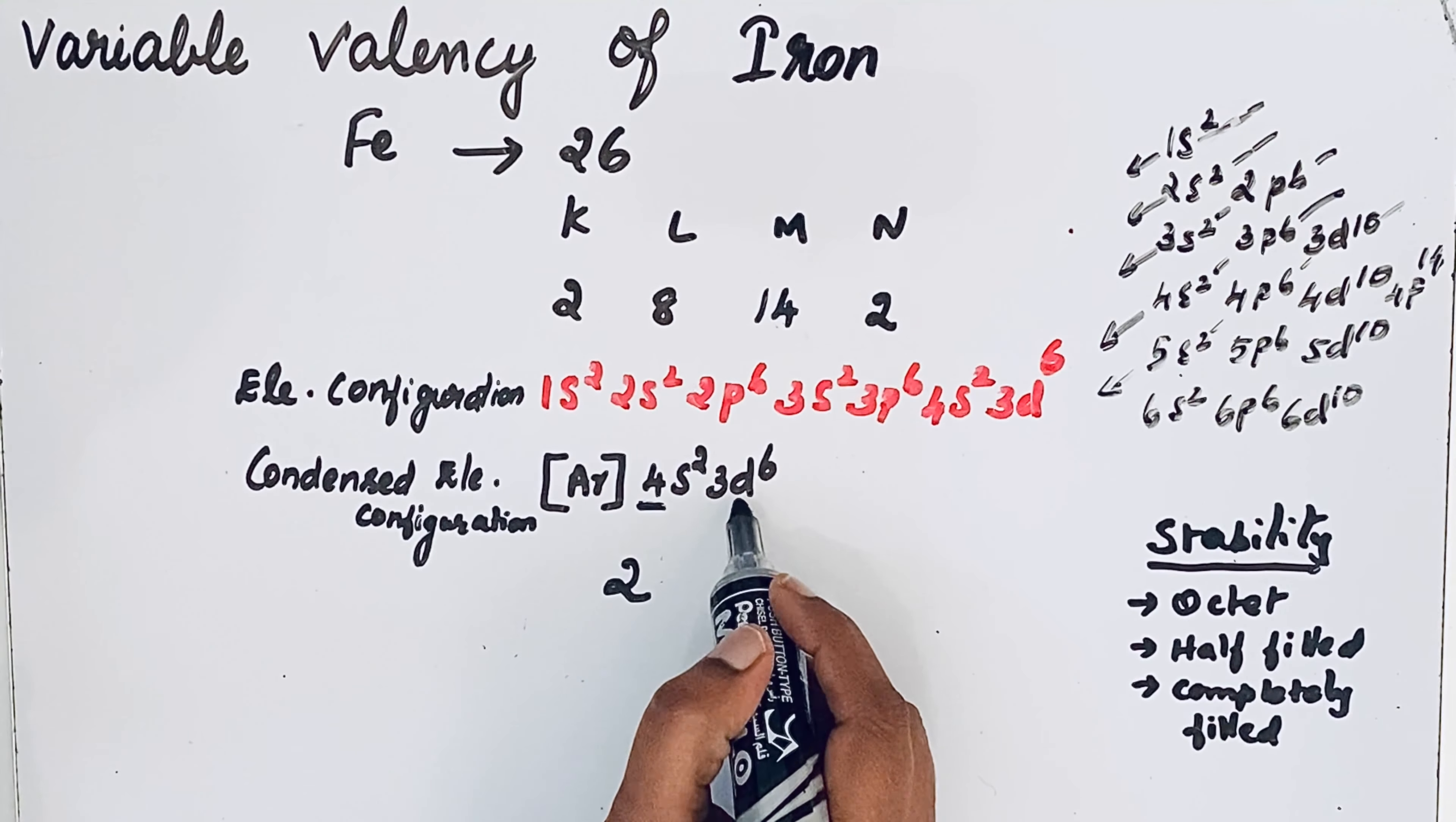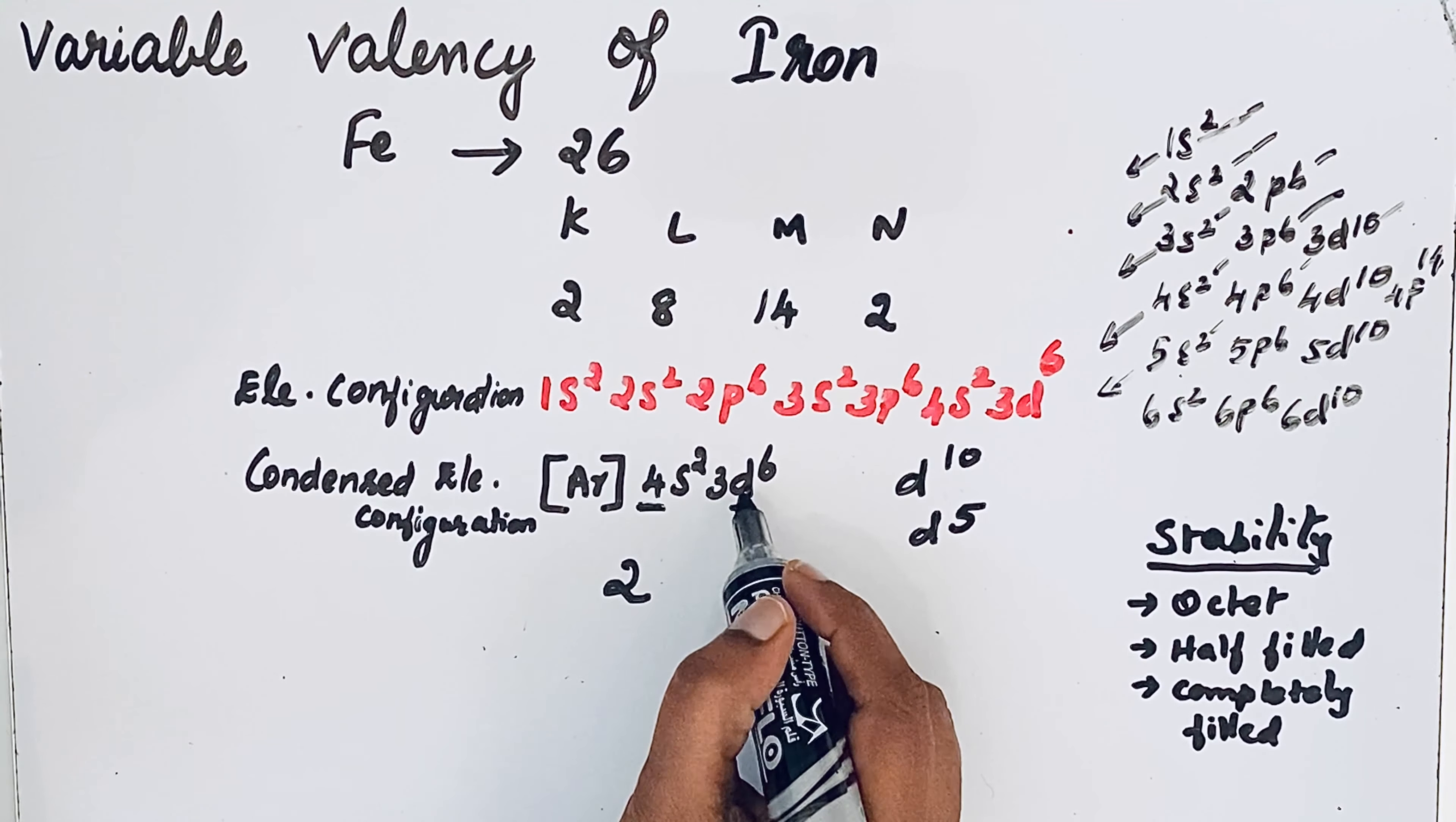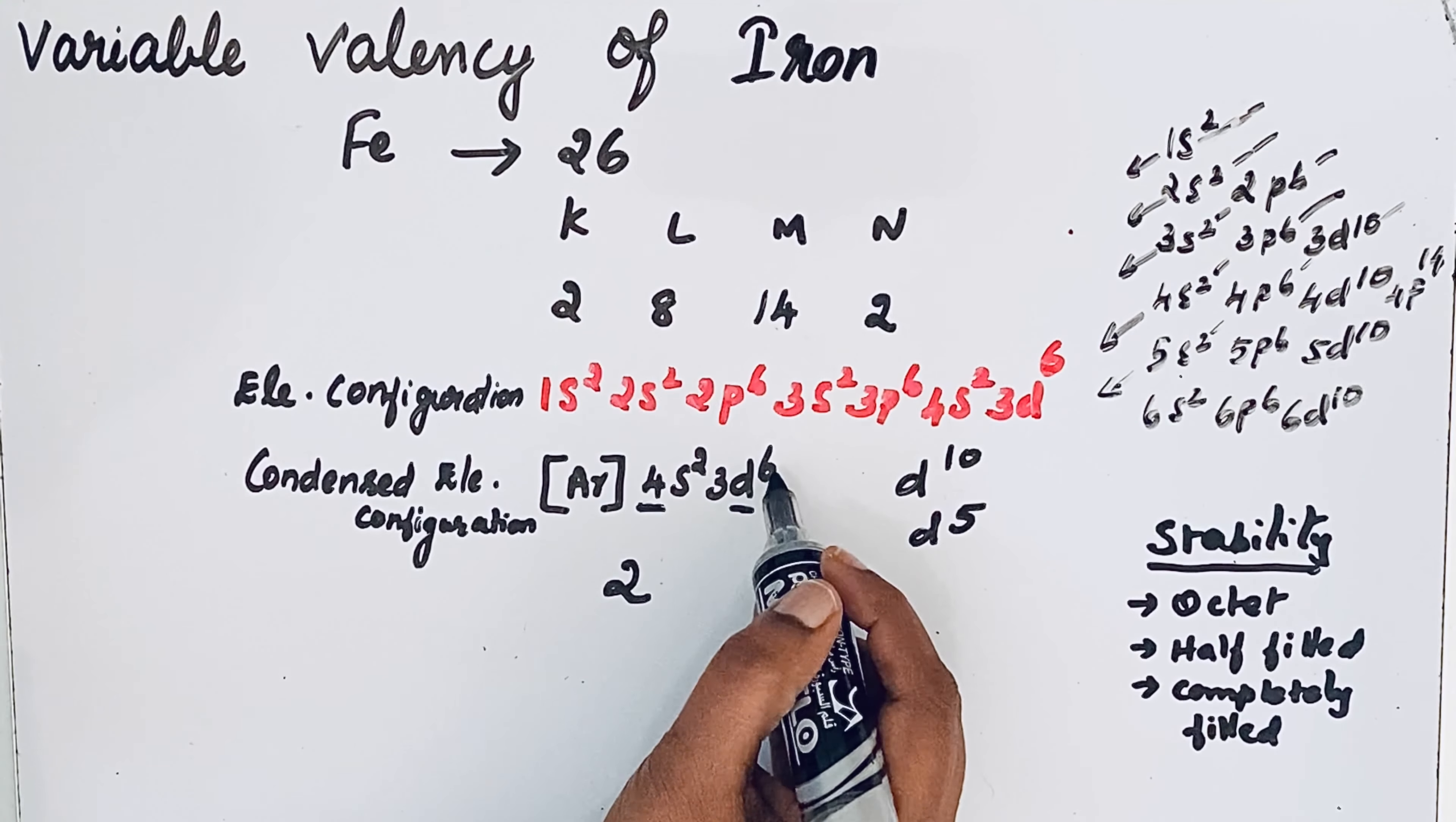But if you look at 3d6, for d orbitals the maximum number of electrons is d10. But half-filled and completely filled orbitals are stable, so half-filled means d5. By losing one electron, this 3d orbital will get that half-filled configuration for extra stability. That is why during chemical combination, iron can readily lose one more electron from 3d orbitals to make 3d5 orbitals.